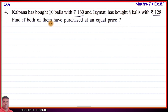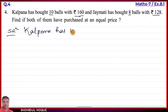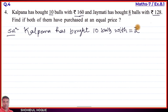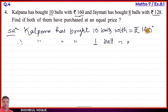We need to check if the price per ball is the same for both. Kolpona has bought 10 balls with rupees 160. Using the unitary method, we find the price of one ball for Kolpona: 160 divided by 10 equals rupees 16.